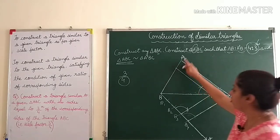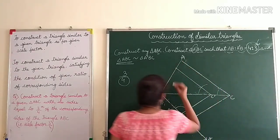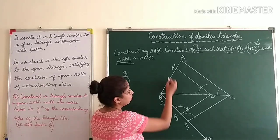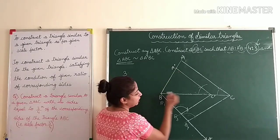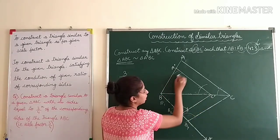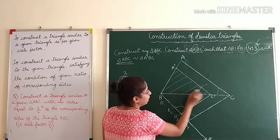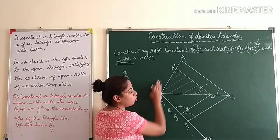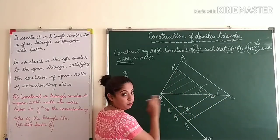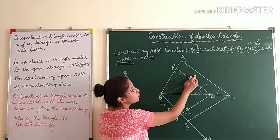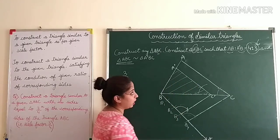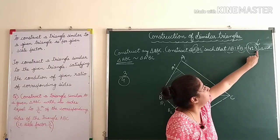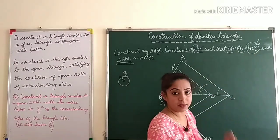Wherever this line touches AB is your point A'. Now we have triangle A'BC'. This triangle is similar to triangle ABC and is three-fourths of triangle ABC — so the new triangle is smaller than the old triangle.